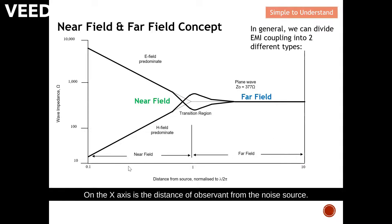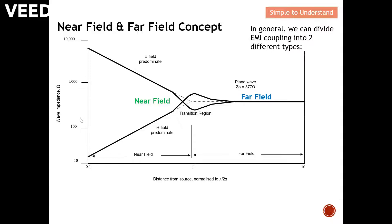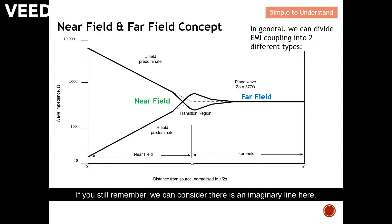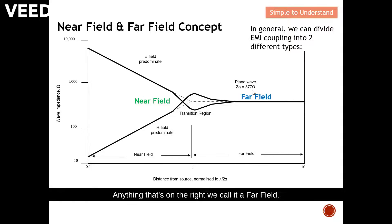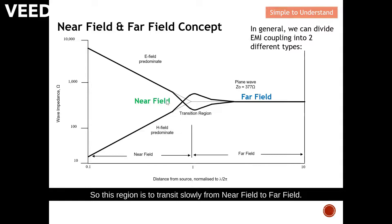On the x-axis is the distance of the observer from the noise source. On the y-axis is the wave impedance. If you still remember, we can consider there is an imaginary line here — anything on the left we call near field, anything on the right we call far field. In between near field and far field we have this transition region, which transitions slowly from near field to far field. In the near field, it is either dominated by E field or dominated by H field.